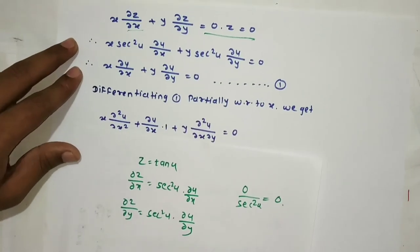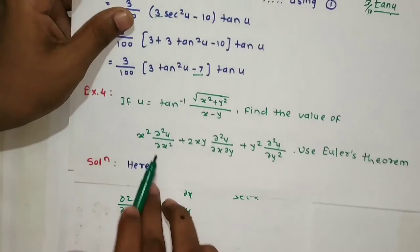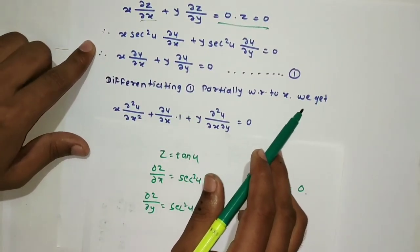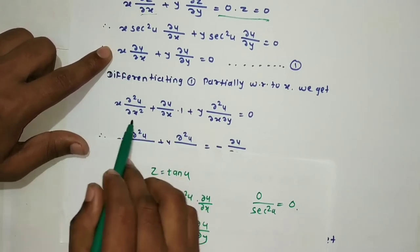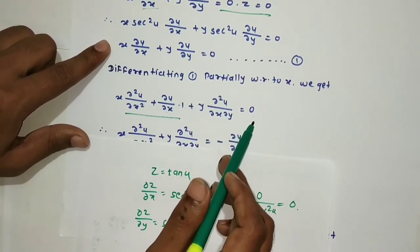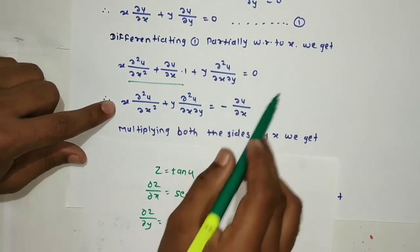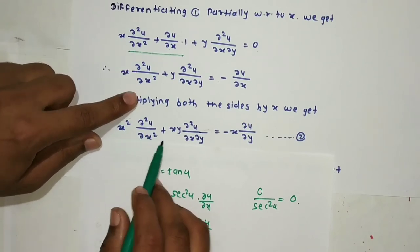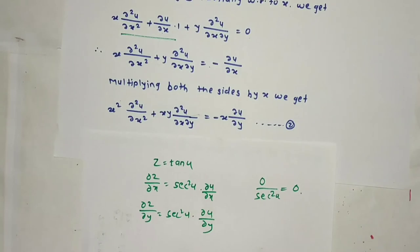By Euler's theorem: x · ∂z/∂x + y · ∂z/∂y = n · z = 0 · z = 0. Since z = tan u, ∂z/∂x = sec²u · ∂u/∂x. Substituting into Euler's theorem and taking sec²u common: x · ∂u/∂x + y · ∂u/∂y = 0. Differentiating this equation 1 with respect to x and multiplying by x, we get: x² ∂²u/∂x² + xy ∂²u/∂x∂y = -x · ∂u/∂x.